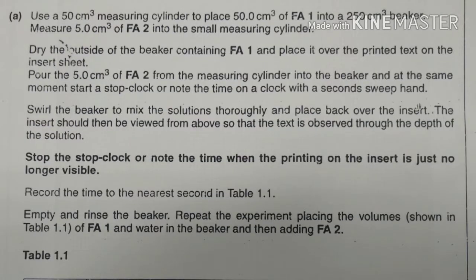Use a 50 cm³ measuring cylinder to place 50 cm³ of FA1 into a 250 cm³ beaker. Measure 5 cm³ of FA2 into the small measuring cylinder. Dry the outside of the beaker containing FA1 and place it over the printed text on the insert sheet.